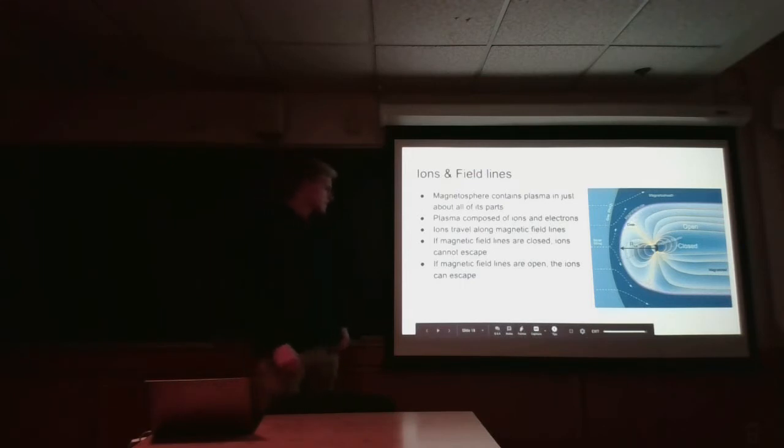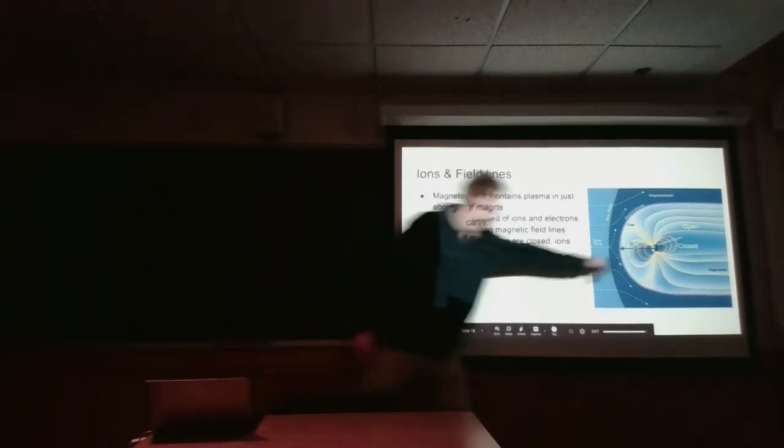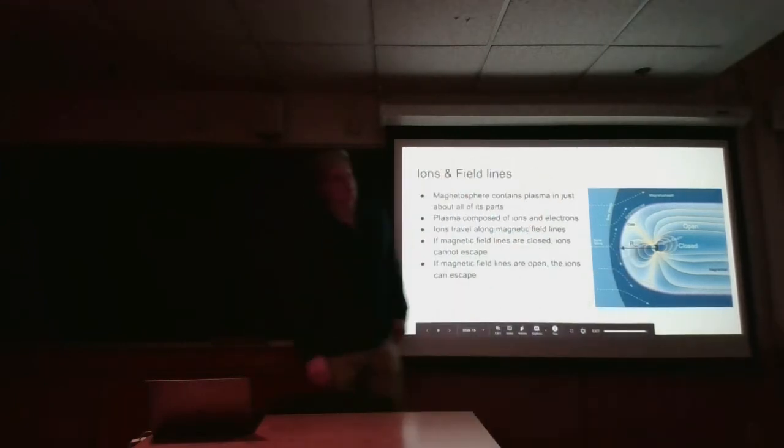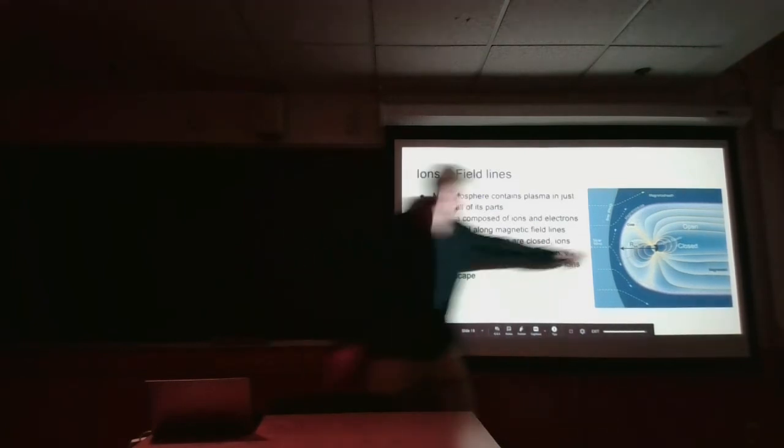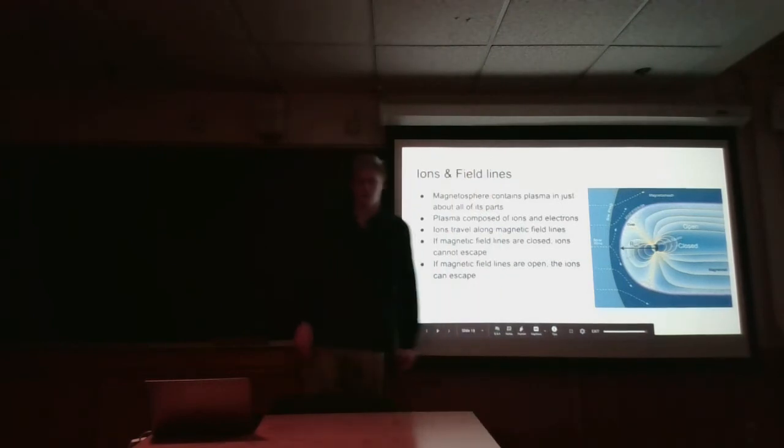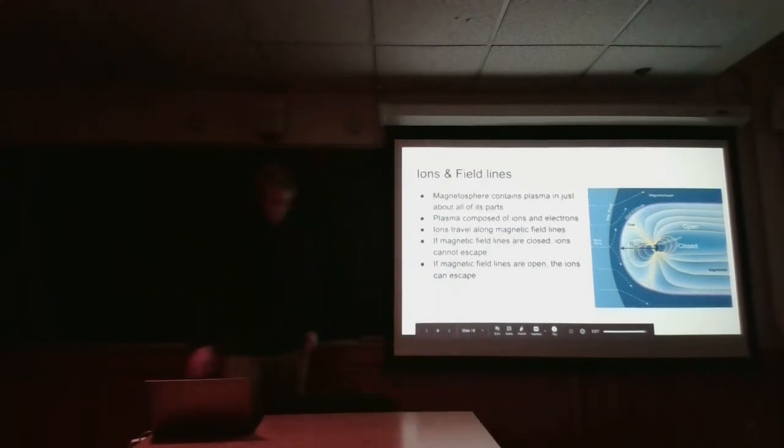So if the magnetic field lines are closed, such as in here, then the ions are unable to escape because they just get trapped in that loop. Whereas if the field lines are open, like here in the lobes, they are able to escape because they will travel along the field lines away from the magnetosphere.